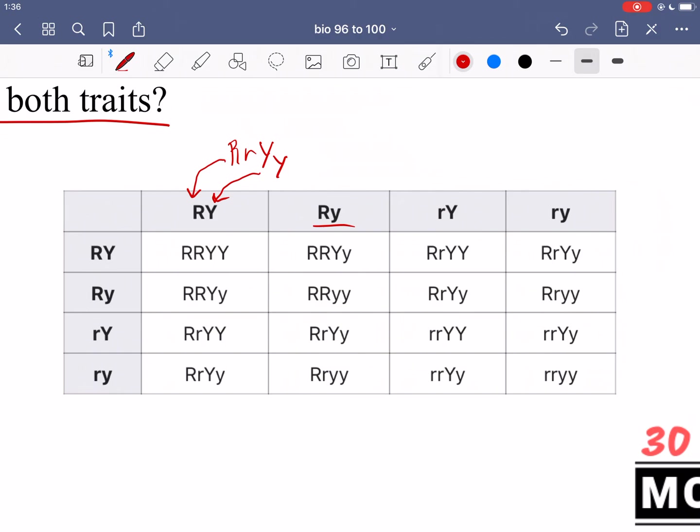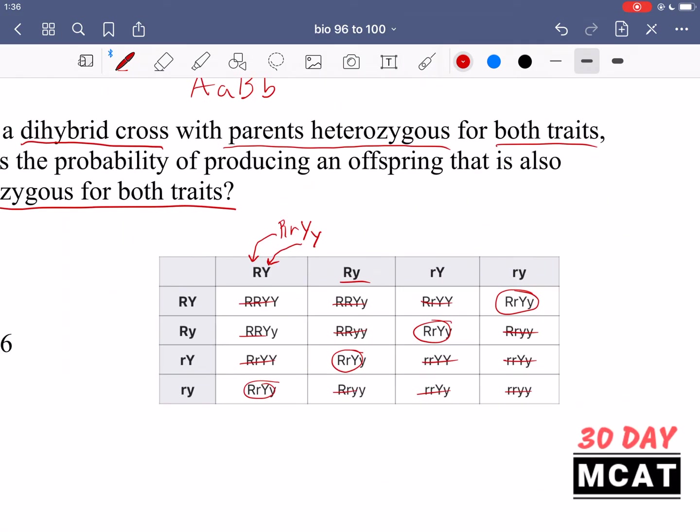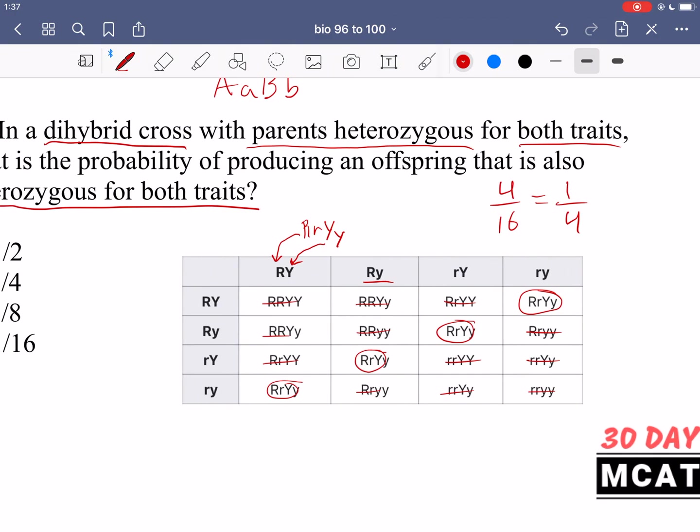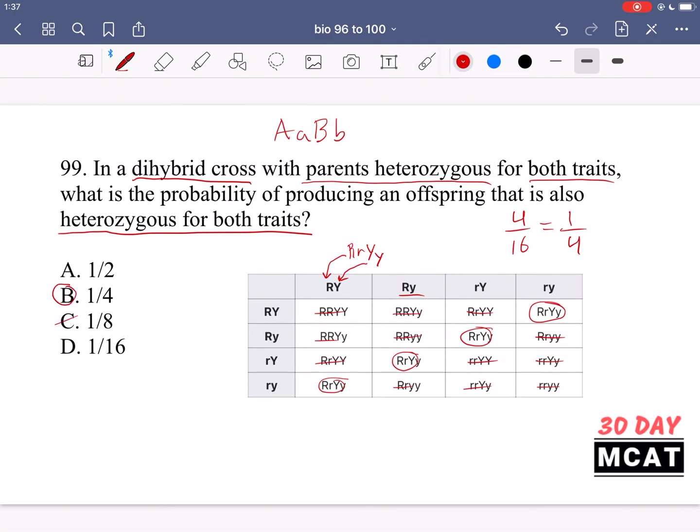Now let's look at ones in which the offspring is heterozygous for both traits. There's one over here. These ones are not. One over here. Another one. And another one. And therefore we only got four out of the 16 possible offspring. So four out of 16 which is also equal to one over four. So approximately one fourth of their offspring will be heterozygous for both traits.